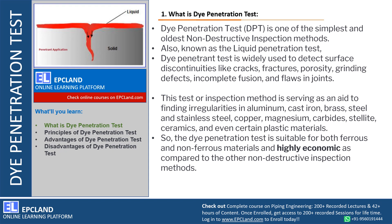This test can be utilized for finding the irregularities in all kinds of metals. For example, Aluminium, Cast Iron, Brass, Steel, Stainless Steel, Copper, Magnesium, Carbides, and even for plastic materials also. So you can say it covers both ferrous and non-ferrous materials — we can check the discontinuities in all of them.